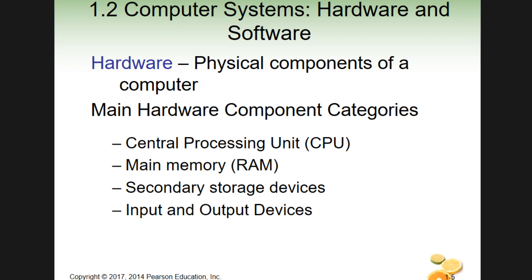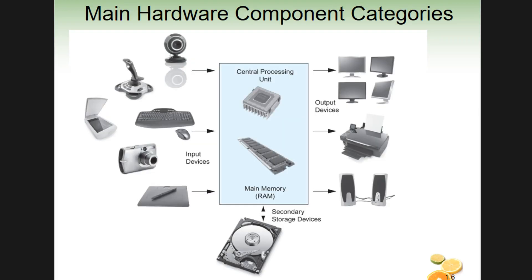Looking at a diagram from the book, the CPU and RAM are at the center. Secondary storage devices shown include an older platter drive — we're slowly switching over to solid state drives in our labs. Solid state drives have no moving parts, are extremely fast, and prices are coming down, which is a big upgrade.